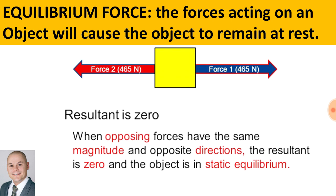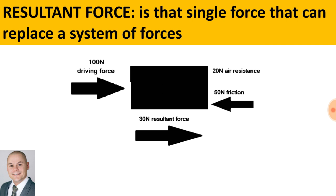Here we have an equilibrium of force. We have 465 Newtons east and 465 Newtons west. When opposing forces have the same magnitude, they are considered to be at equilibrium with a zero resultant. Here we have three forces acting on an object producing a resultant force of 30 Newtons: 100 Newtons driving force, minus 20 Newtons air resistance and 50 Newtons friction, giving us a single force that replaces the system of forces.